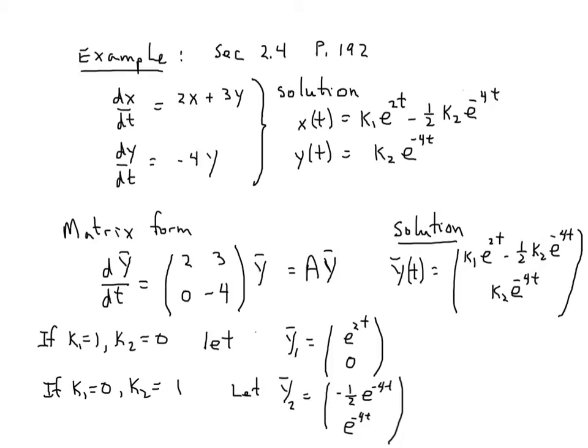In chapter 3, we'll use matrix methods based on eigenvalues and eigenvectors. We'll get the same answer. In matrix form, here is our system and solution: k1 e^(2t) minus one half k2 e^(-4t) and k2 e^(-4t) for y.